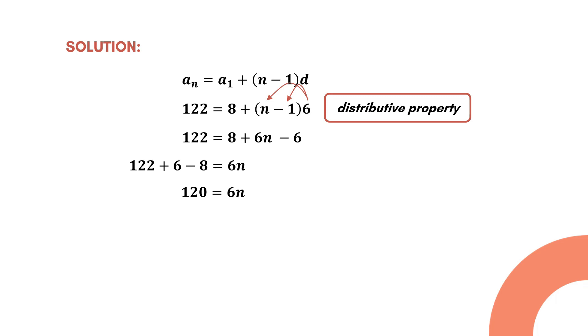Lastly, divide both sides by 6 to obtain the value of n. Therefore, 122 is the 20th term of the sequence.